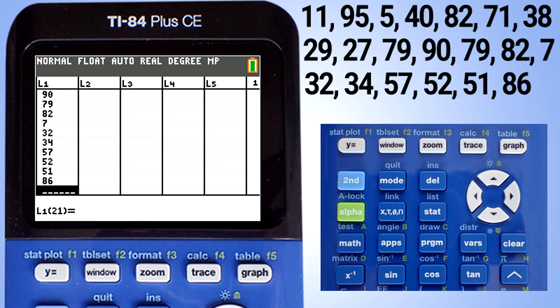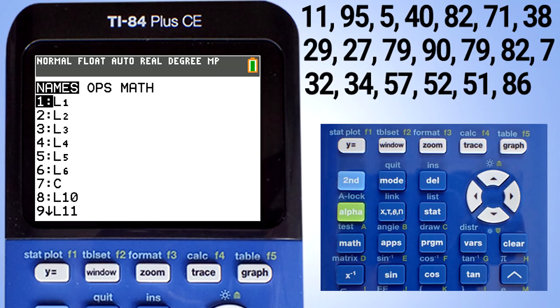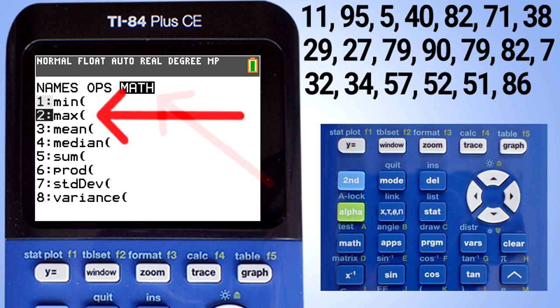Let's find the range. We're going to exit this list by pressing the second button, then the quit button. We are back at the home screen. Now press the second button and the list button. This screen pops up. Move over to the math tab.